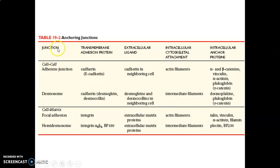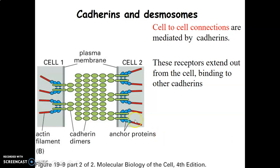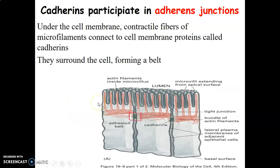For cell-to-cell junctions, we have adherens junctions such as cadherins, and desmosomes which contain desmogleins and desmocollins. For cell-to-matrix, we have focal adhesions such as integrins, and hemidesmosomes which also contain integrins. Adherens junctions connect onto actin filaments; desmosomes connect onto intermediate filaments. Focal adhesions connect onto actin filaments while hemidesmosomes connect onto intermediate filaments. Cadherins extend out from the cell and bind other cadherins on adjacent cells.